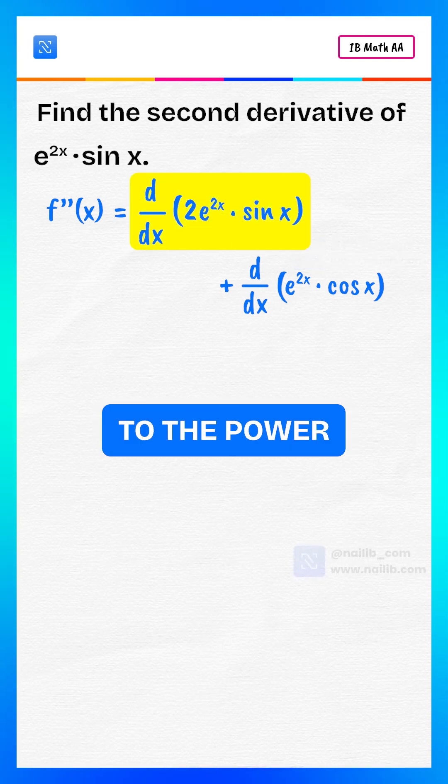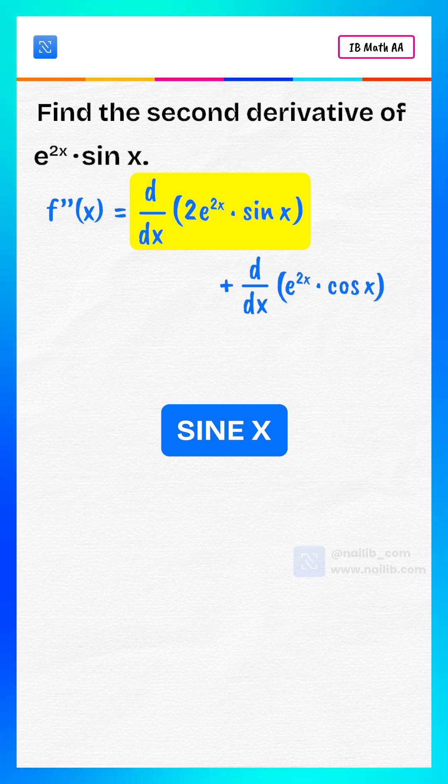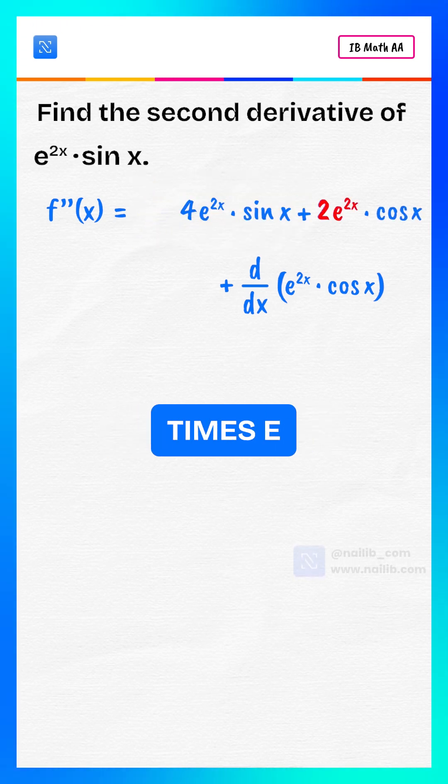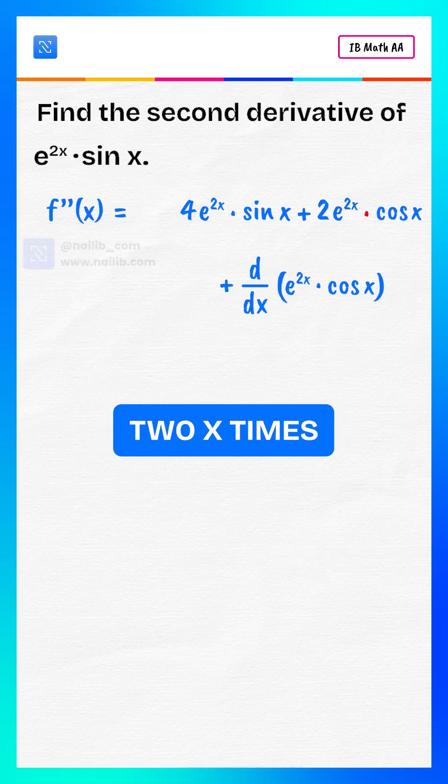The derivative of 2 times e to the power 2x times sine x is 4 times e to the power 2x times sine x plus 2 times e to the power 2x times cosine x.